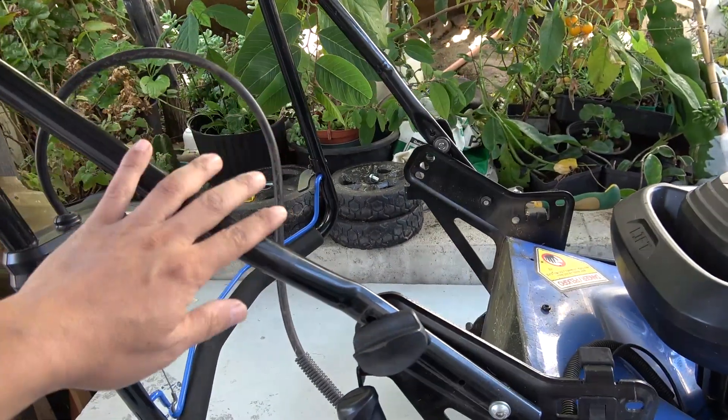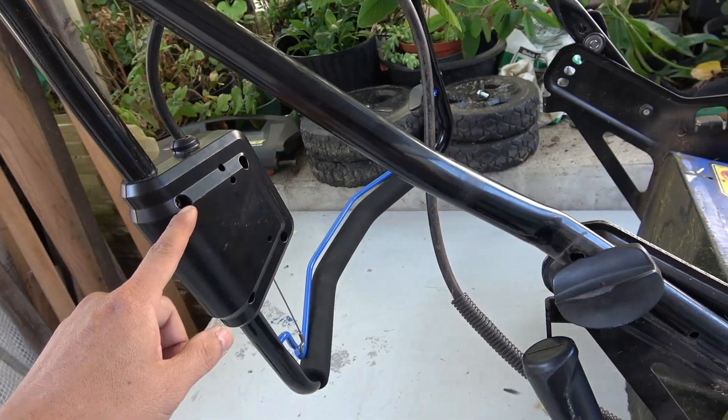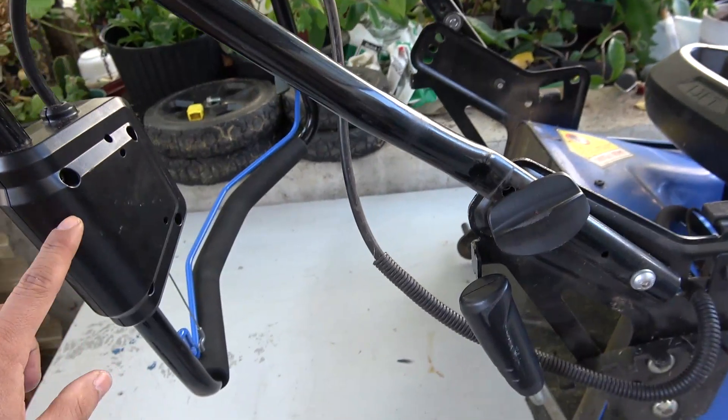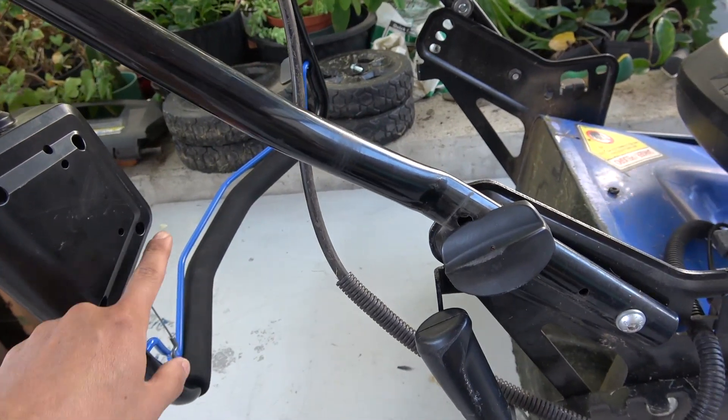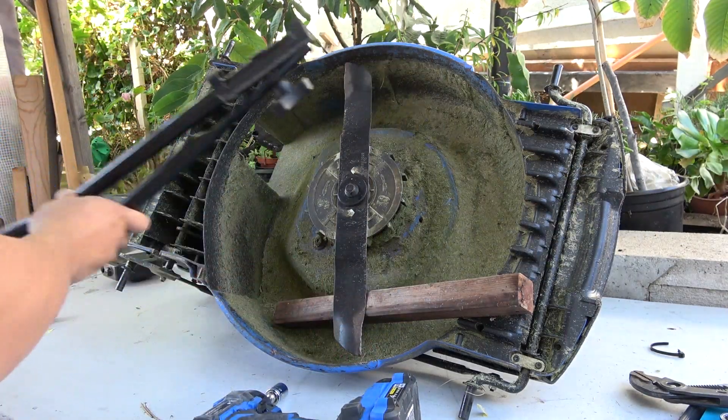Next step is to remove this handle and the hinges and we got a switch here that's attached to this handle and I have to remove the switch. So there are four torque screws t20 size. We got handles out.